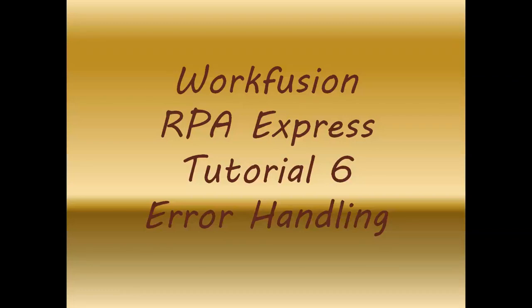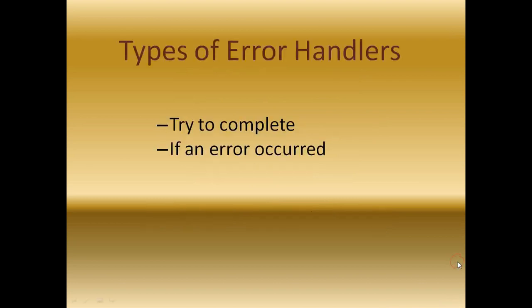Hello everyone. In today's Workfusion RPA Express tutorial 6, we will be learning about error handling. There are two types of error handlers: 'try to complete' and 'if an error occurred'. It's similar to the try-catch block in C or Java, where you try to complete a set of actions, and if an exception occurs it rolls back to the error handler, wherein an alternate action or script gets executed to handle the error.